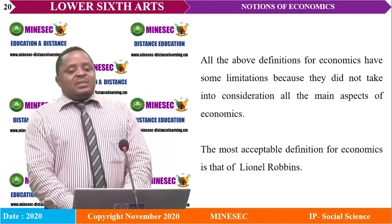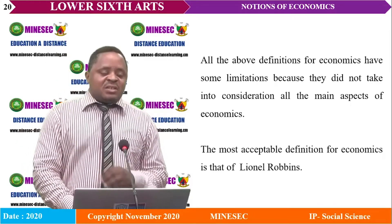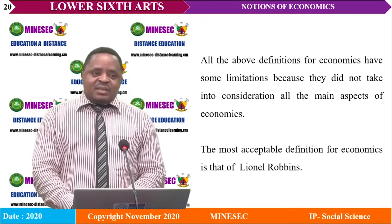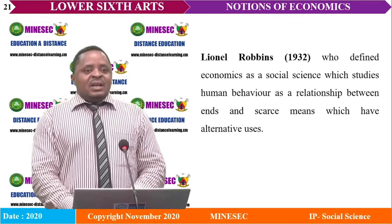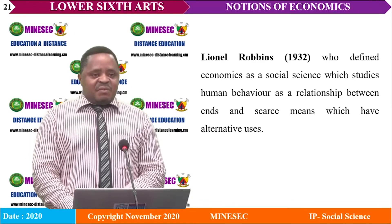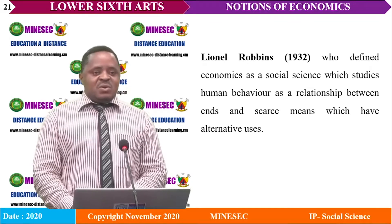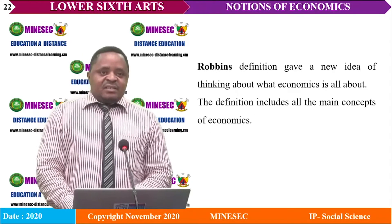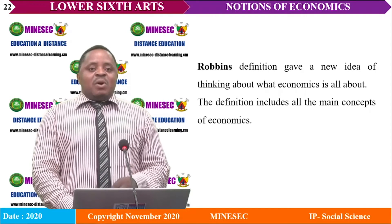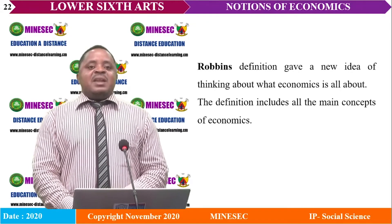All the above definitions had some limitations because they didn't take into consideration all the aspects of economics. The most acceptable definition is that of Leonard Robbins, who defined economics as a social science which studies human behavior as a relationship between ends and scarce means which have alternative uses. Robbins' definition gave a new idea of thinking about economics because it includes all the main aspects of economics.